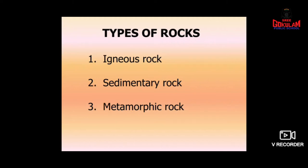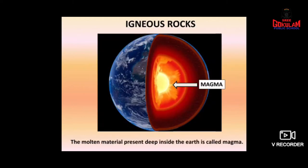Now we can study what igneous rock is. Deep inside the earth, you know what you can see? There is a liquid substance there called magma. We said deep inside the earth there will be rocks, but the temperature inside is so high that the rocks can melt there. So this molten material present deep inside the earth is called magma.